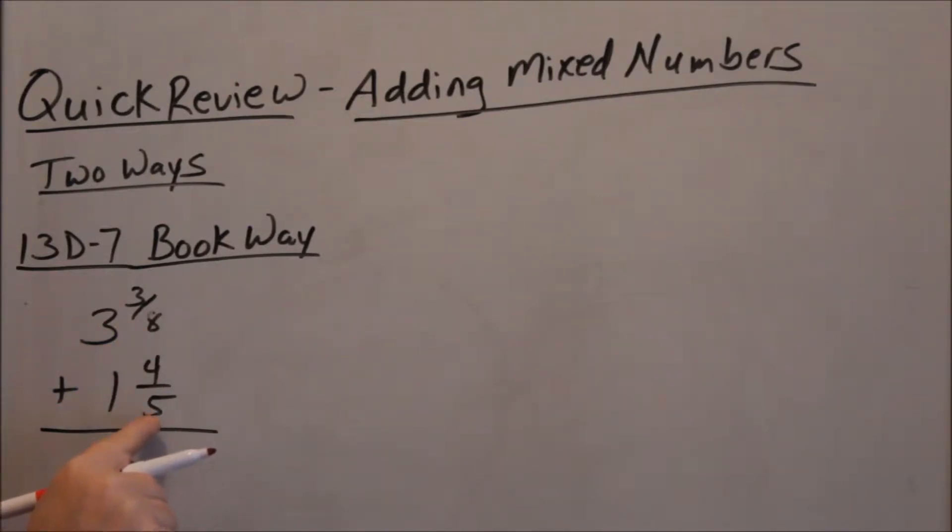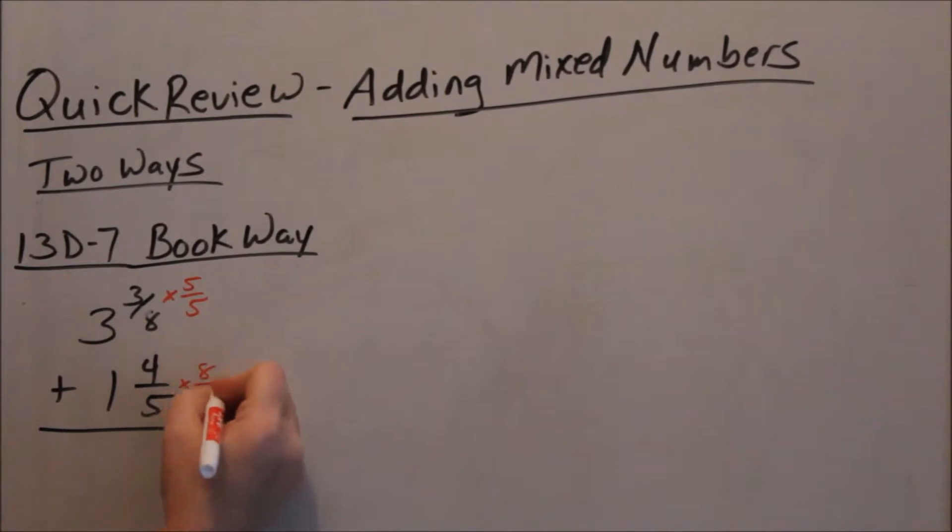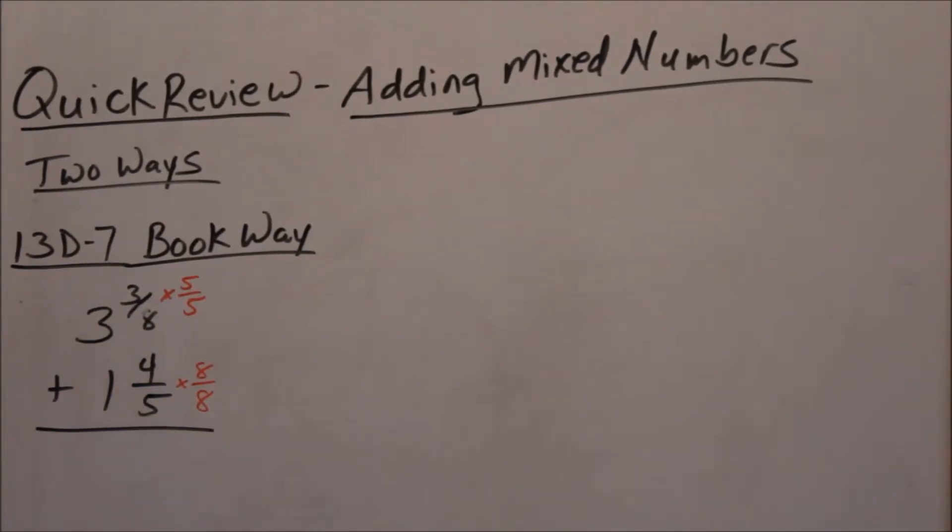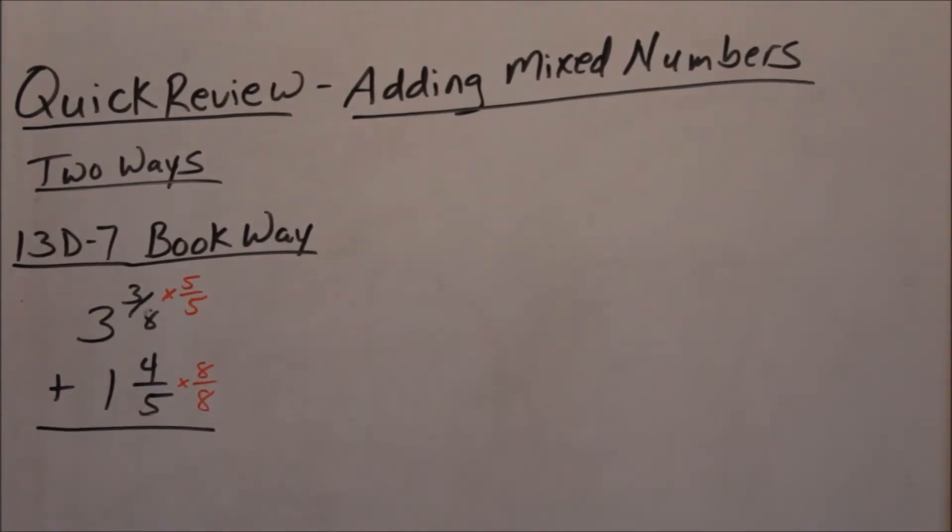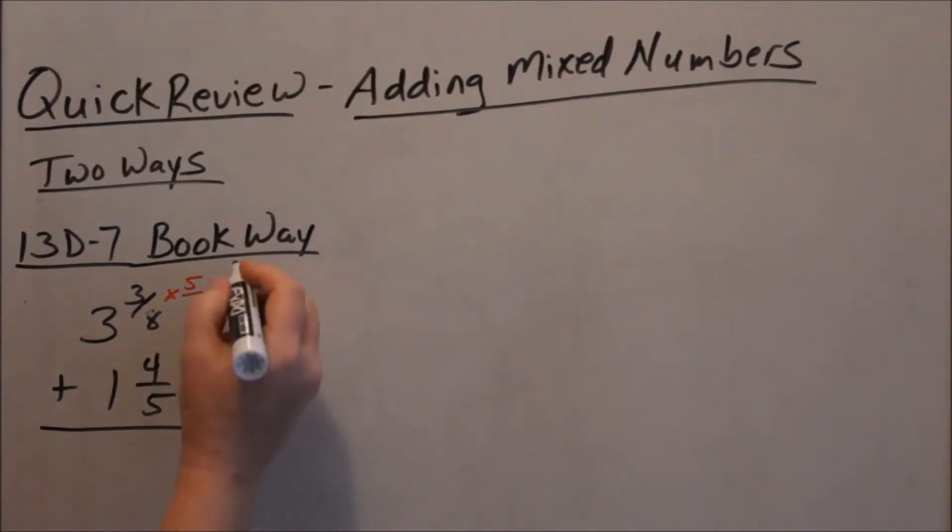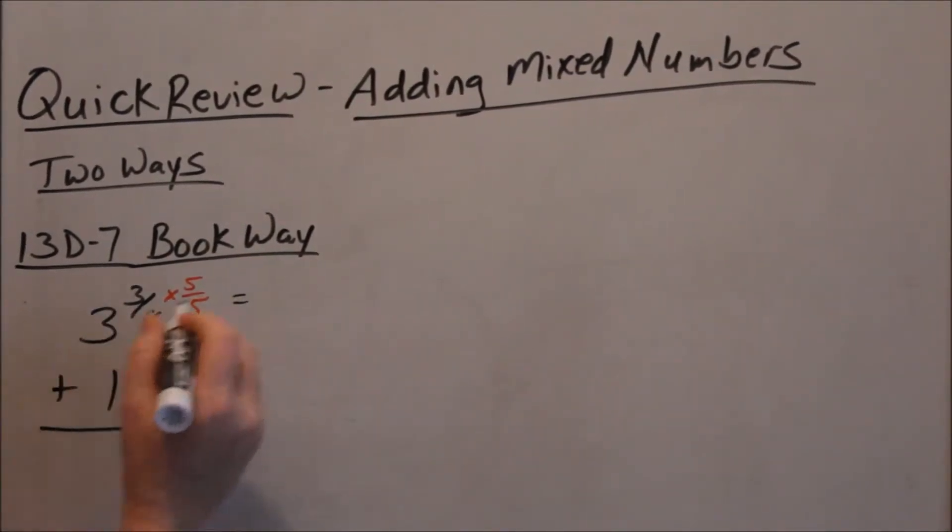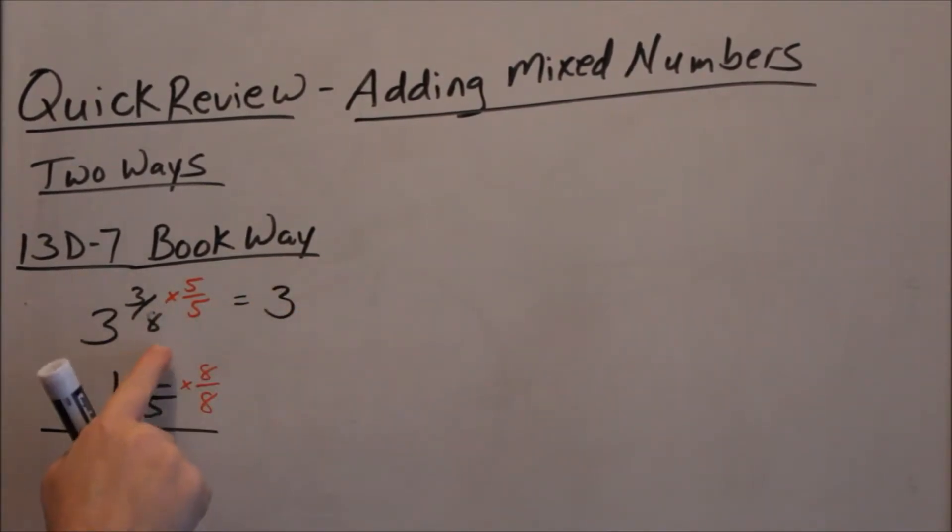So I can take my denominator with a five and multiply it to that first fraction. Then I can take this denominator of eight, multiply it to that fraction. Whatever you do to the numerator, you have to do the denominator or vice versa. If you do it to one, you have to do it to the other. So I'll still have my big number three, multiplying these fractions, 3 times 5 is 15, 8 times 5 is 40.